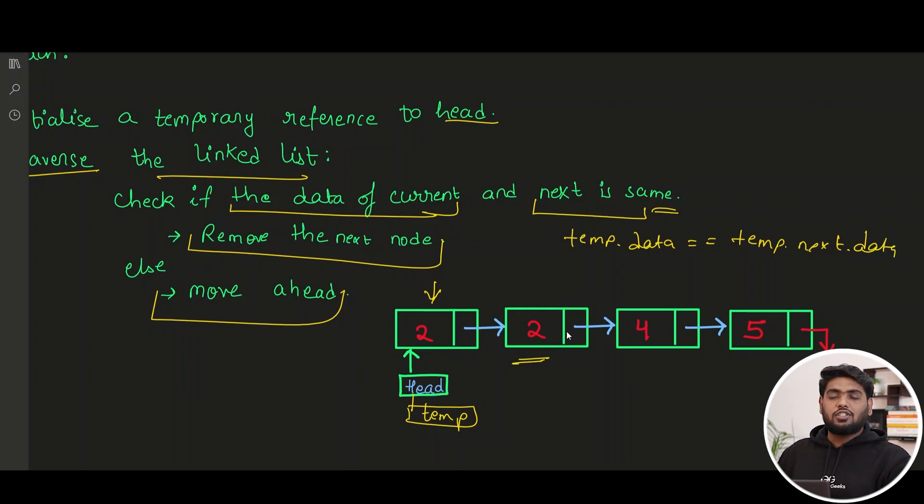If these two things are same, then what I have to do? I have to remove this node, and how it will be done? It is very simple. Where we are standing, we just have to break this connection and we have to make this connection. Then this node will be lost. You won't be having any connection to this particular node right? So it seems easy, let's see how it is done.